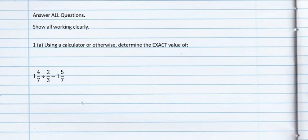Part 1a, using a calculator or otherwise, determine the exact value of 1 and 4 over 7 divided by 2 over 3 minus 1 and 5 over 7.